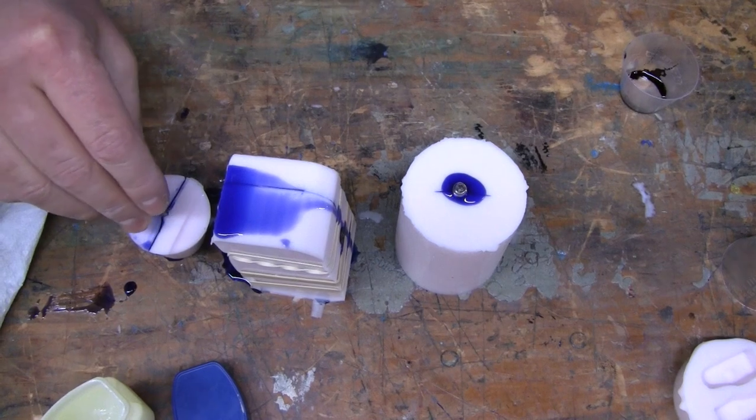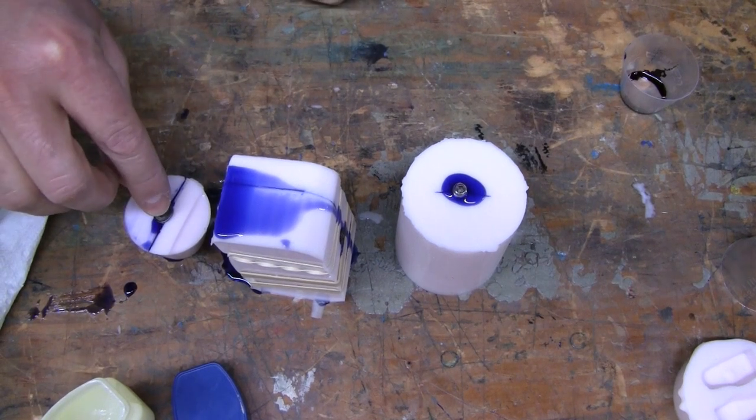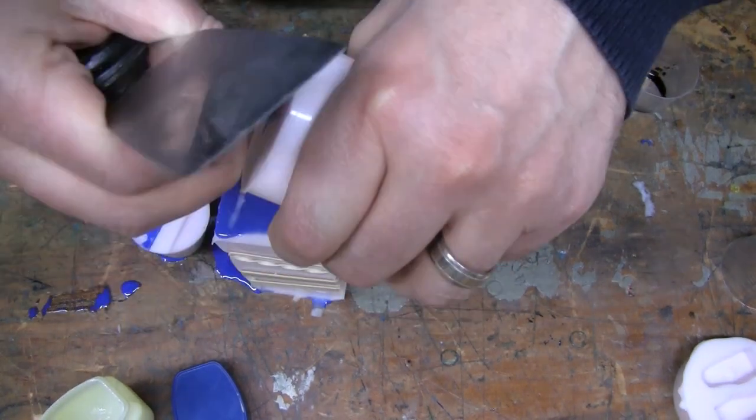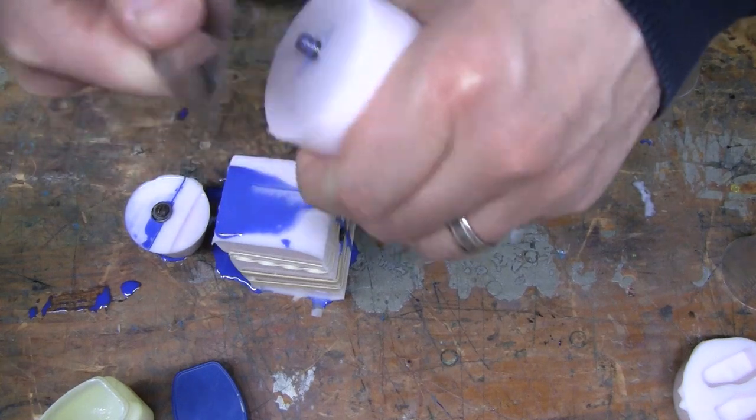If you don't want the screw to be permanently bonded in, apply a little Vaseline to the screw threads and it'll back out nicely.